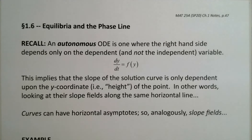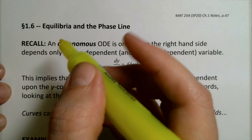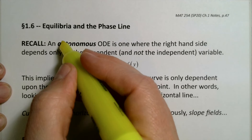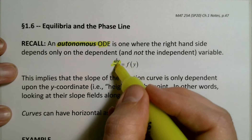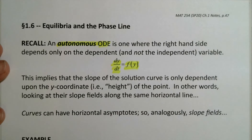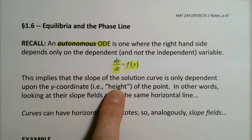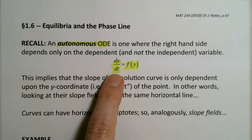In section 1.6, we're going to take a look at the equilibrium solutions for autonomous differential equations and put them to good use. An autonomous differential equation has a very special feature: the right-hand side depends only on the dependent variable. That is to say, the derivative dy/dt only depends on y. So wherever you are in the vertical direction — the y direction, or the height on your plane — determines entirely the slope of the solution curve.